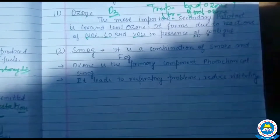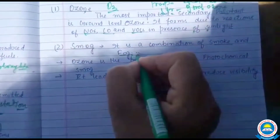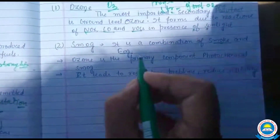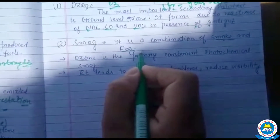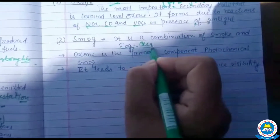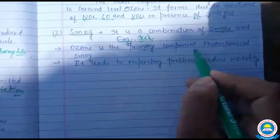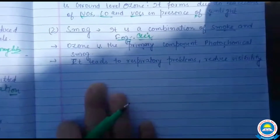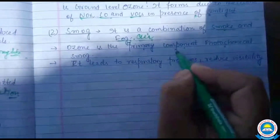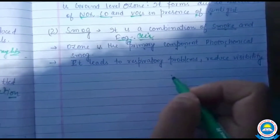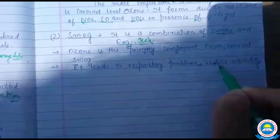Stratosphere वाली good ozone harmful UV radiation को earth पर आने से रोकती है। दूसरा secondary pollutant है smog — smoke और fog का combination। Smoke air-borne particulates होते हैं और fog एक aerosol होता है जिसमें tiny water droplets or ice suspended होते हैं air में। Ozone primary component है photochemical smog का। Smog respiratory problems create करता है और visibility को one kilometer से भी less कर देता है।